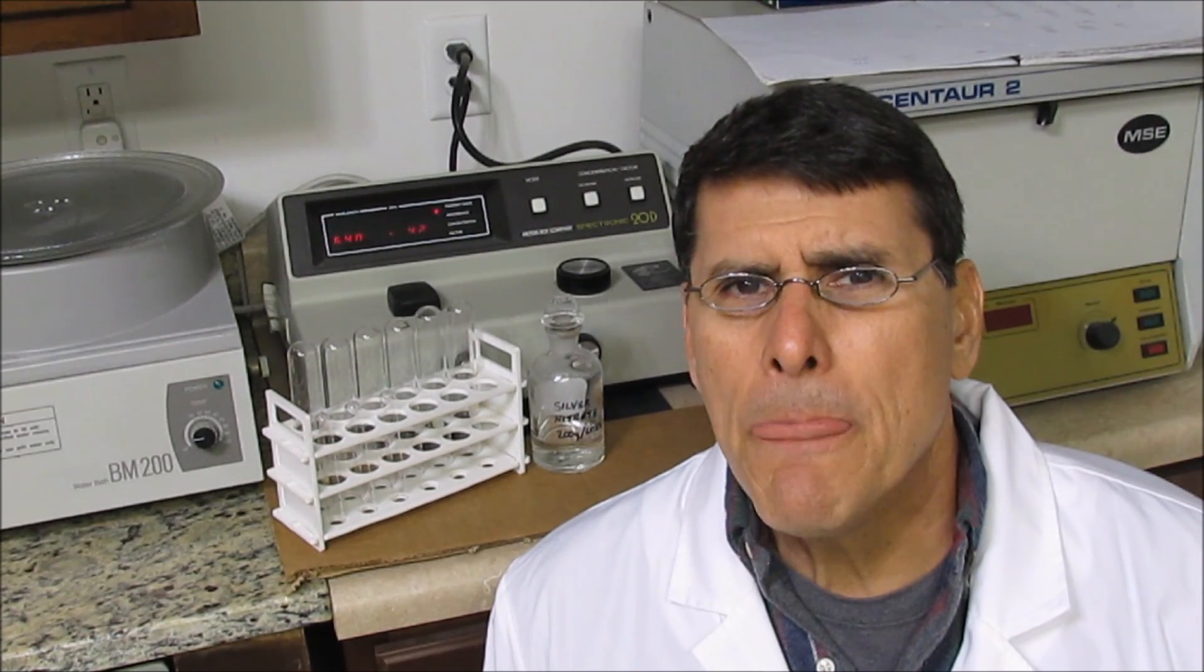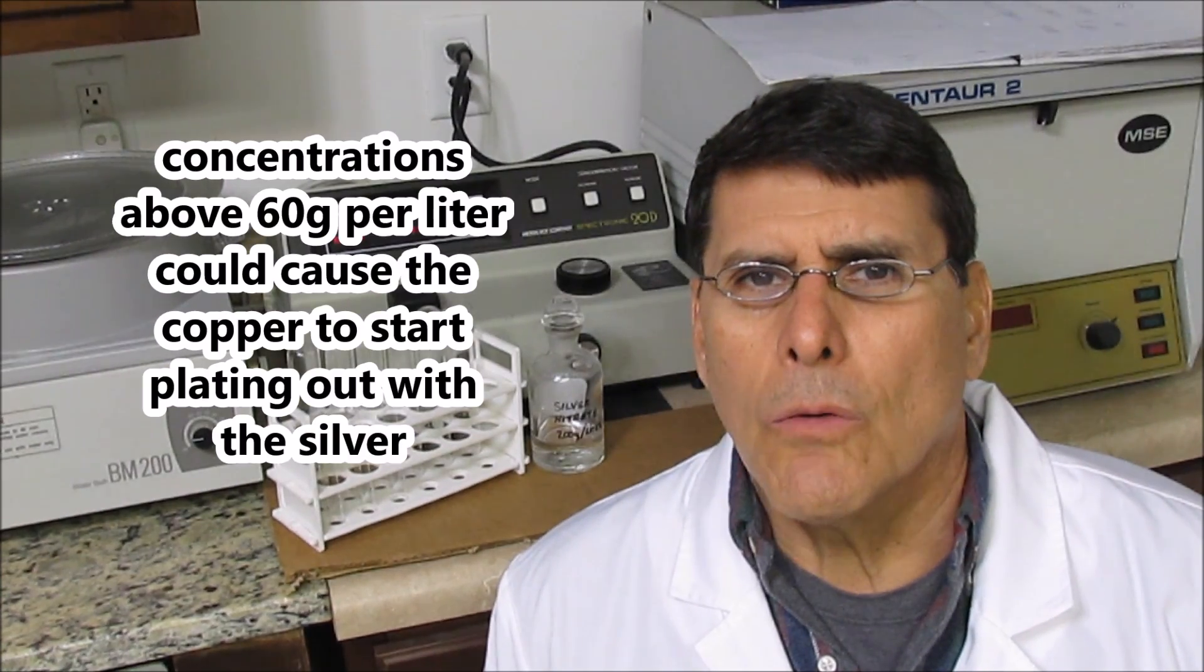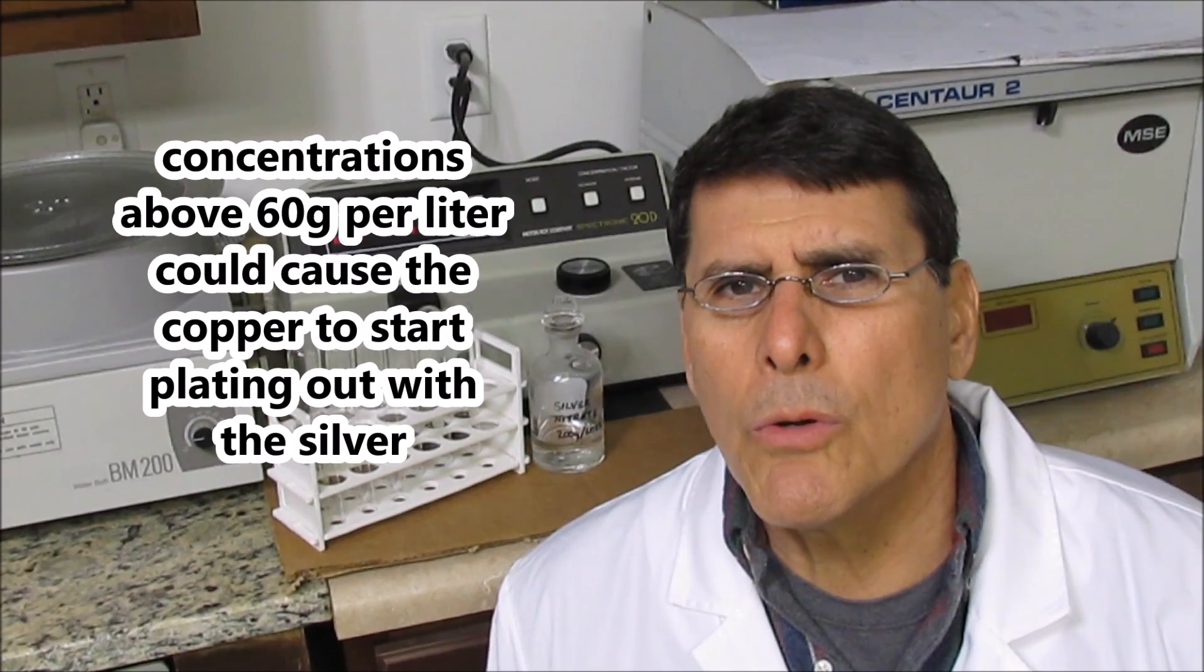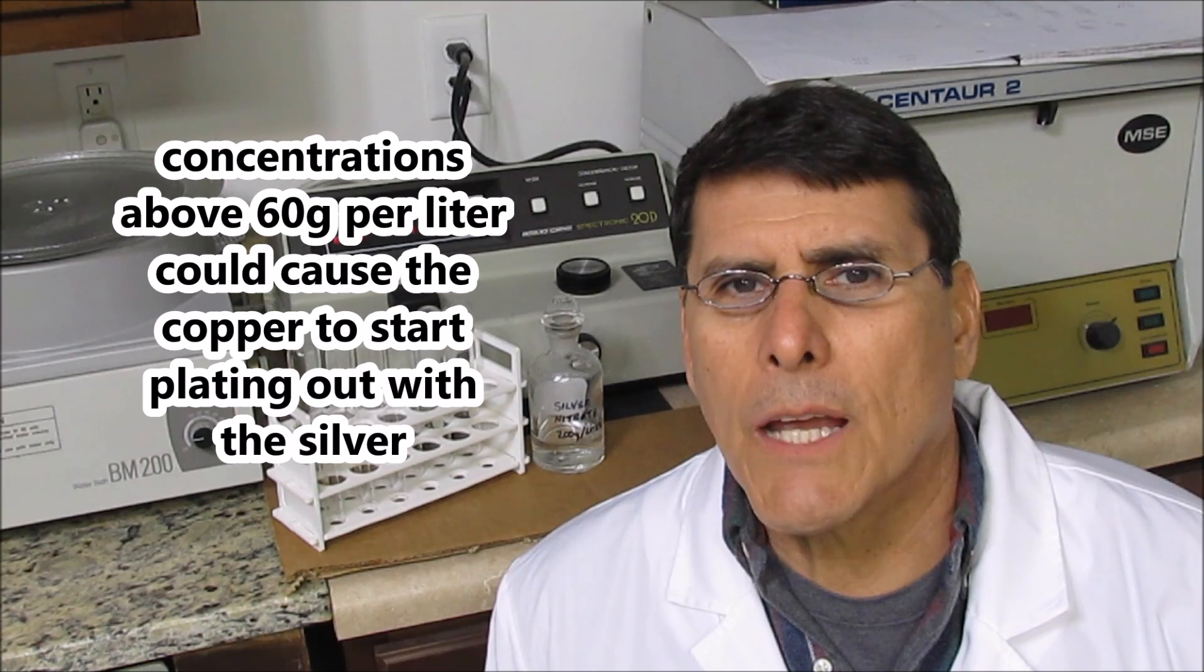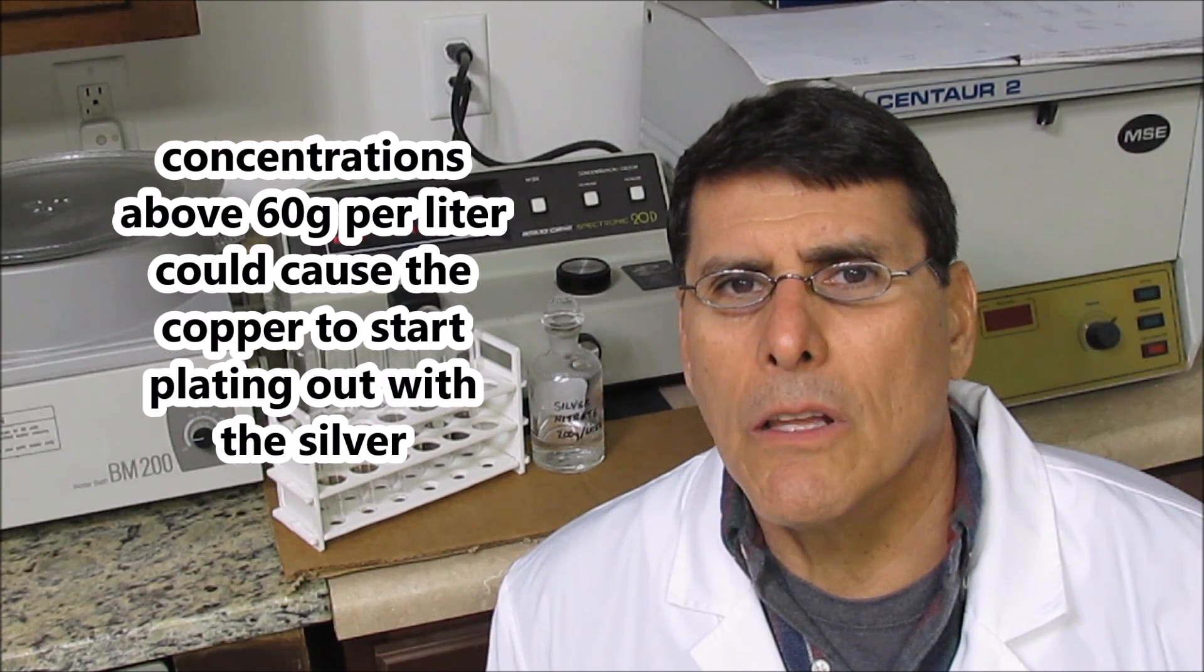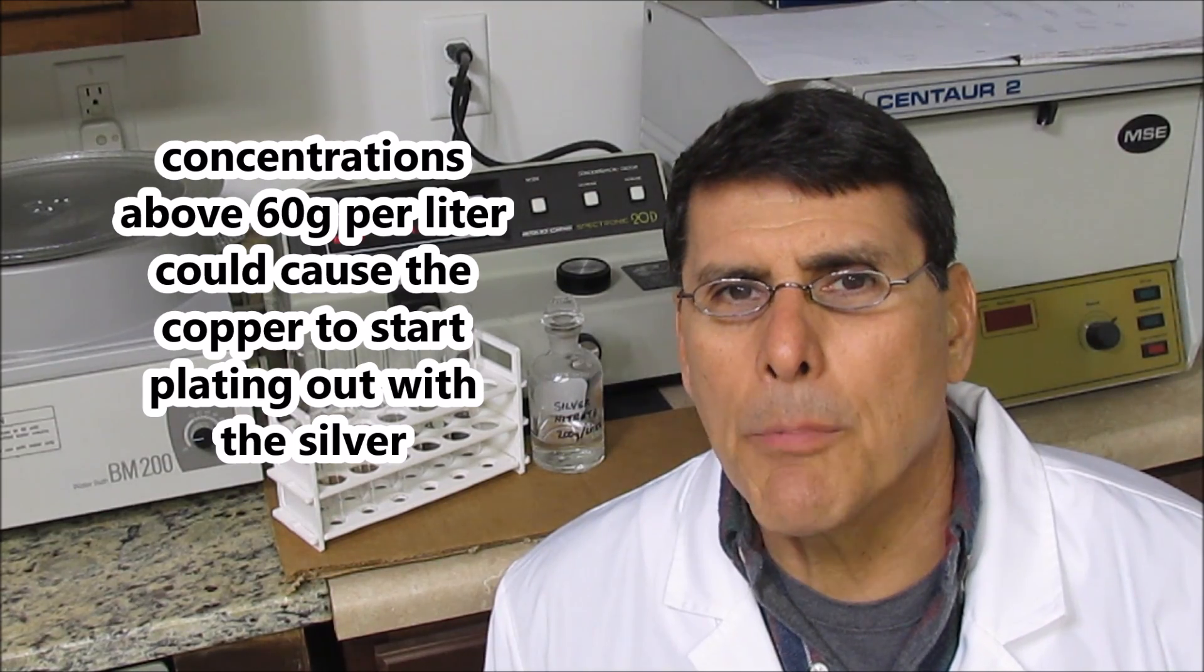Today I'm going to start up my electrolytic silver cell. I want to use the electrolyte from a previous refining, but it looks dark blue like there's a lot of copper in there. 60 grams per liter is the limit that I want to stay under for dissolved copper in my silver cell electrolyte, and I can't tell by looking how much copper is in there.